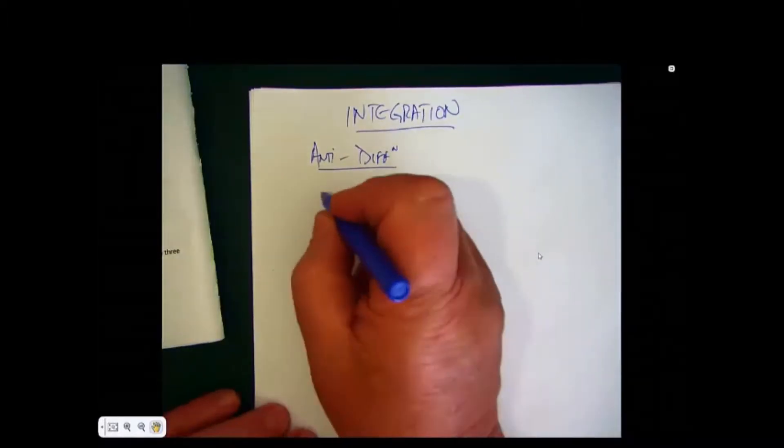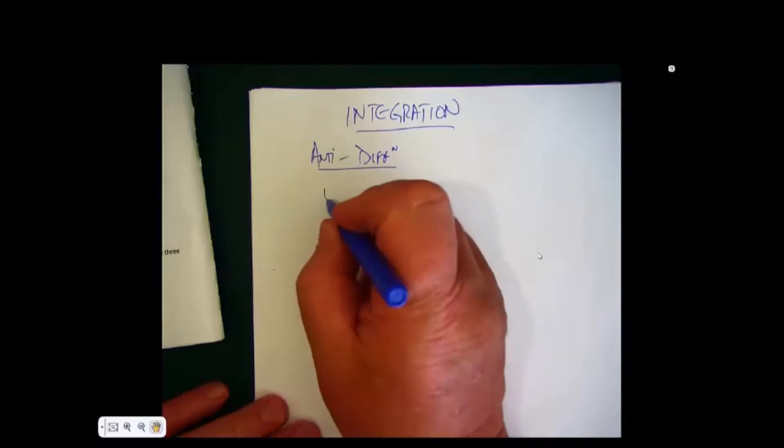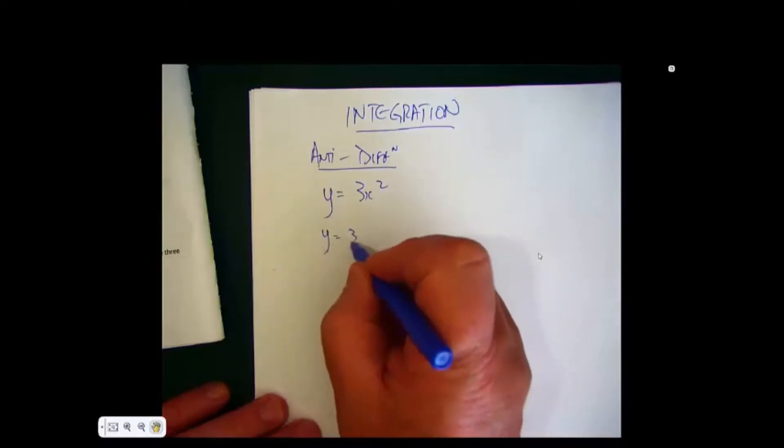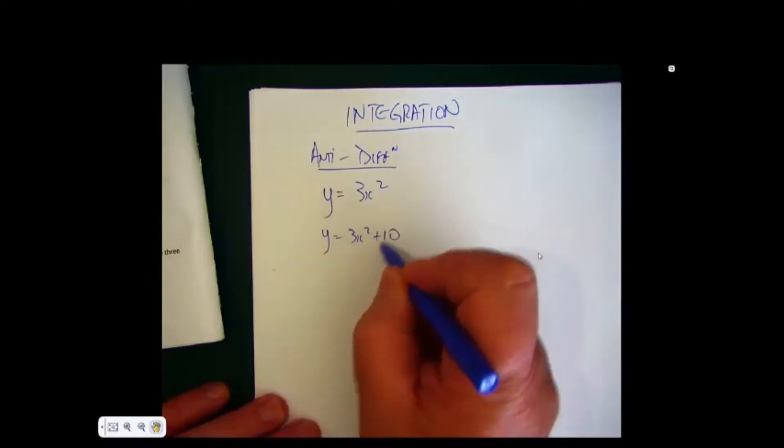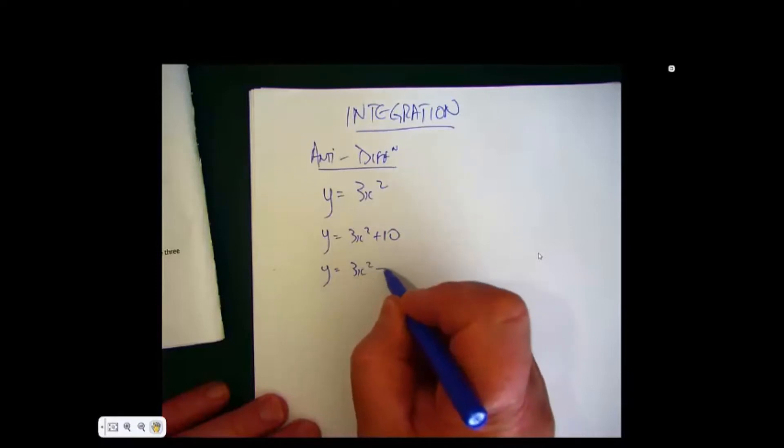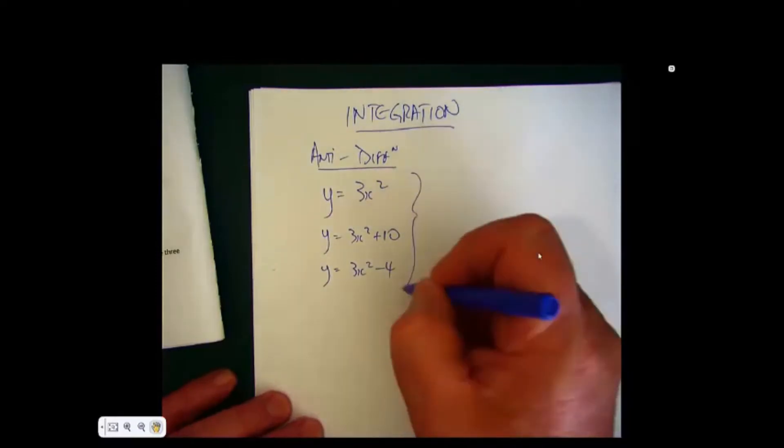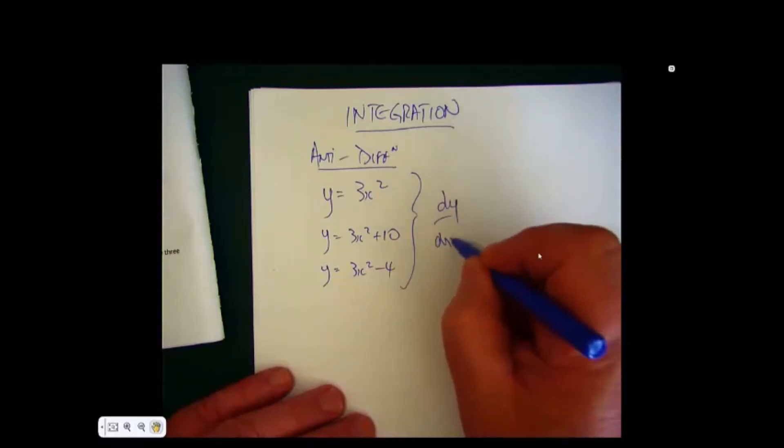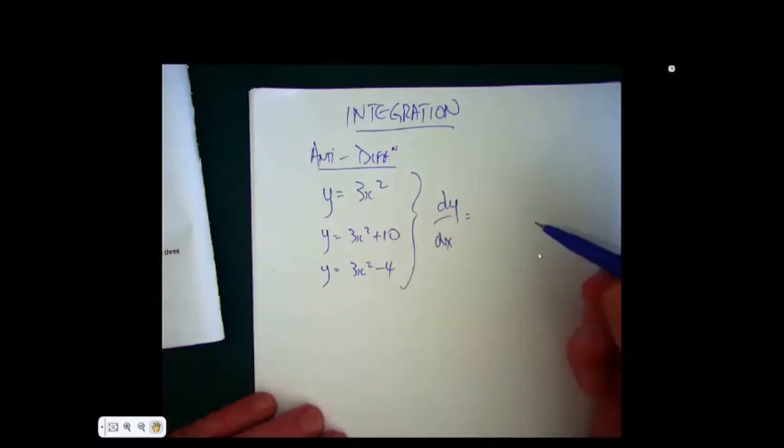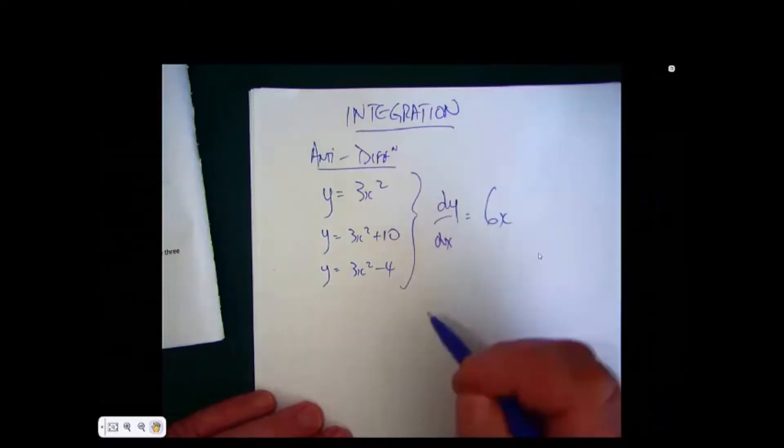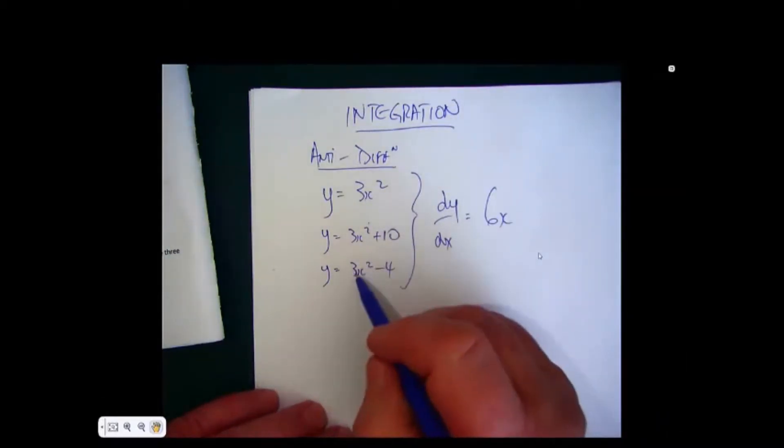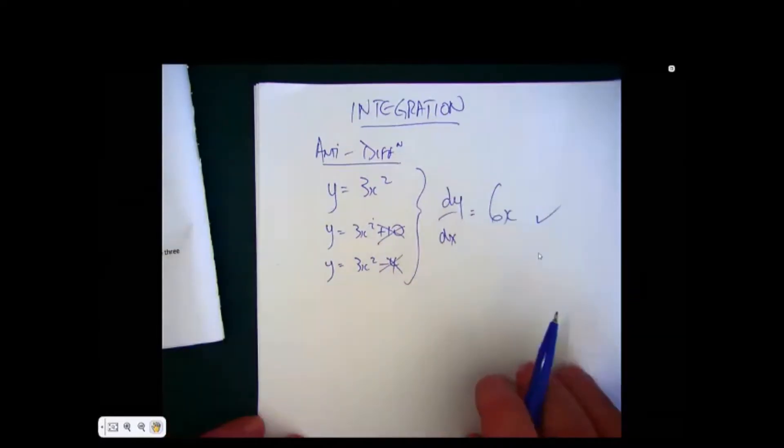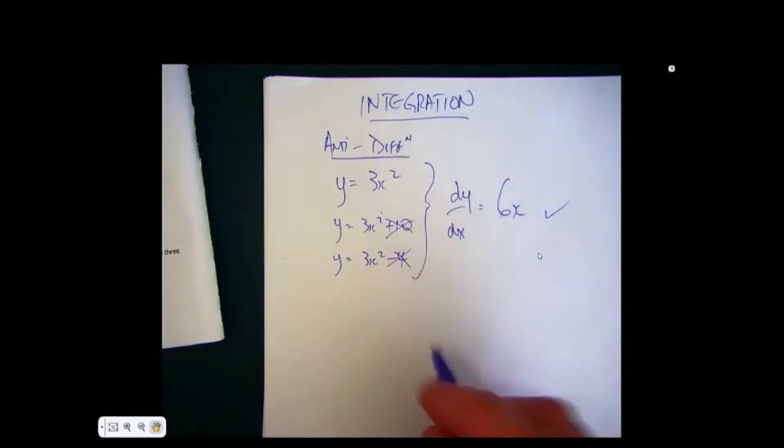Now let's have a look at some interesting terms. If I give you 3x squared, this one can be 3x squared plus 10, and then let y equal 3x squared minus 4, and ask you to differentiate these, you'll say oh that's easy, because in all cases the differentiated form dy/dx is in fact 6x. They all give a derivative of 6x.